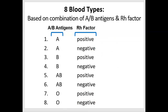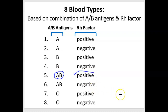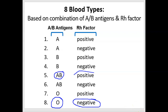Combining the two antigen groups gives us eight different possible blood types. If somebody has A antigen and Rh factor, they're A positive; without Rh, they're A negative. Similarly for B: B with Rh is B positive; without Rh is B negative. If someone has all three antigens — A, B, and Rh — they're AB positive. If someone doesn't have any of those antigens — no A, no B, no Rh — they're type O negative.